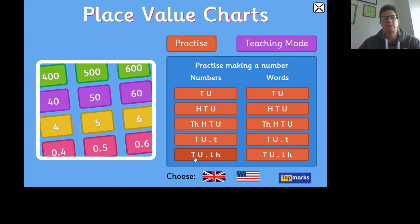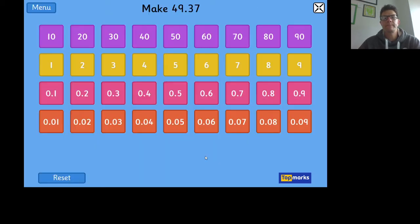So we're going to click on that, and it says 'Can you make 49.37?' We're going to partition this number and select each place value one at a time. We've got four tens, which is the same as saying 40.